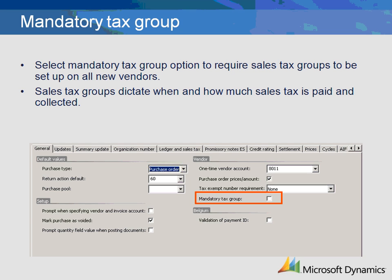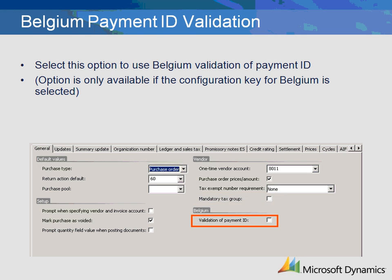The Mandatory Tax Group field will, if selected, require that all new vendors have an associated tax group defined in the vendor master. This tax group will determine when and how much sales tax is paid to the vendor. There is also an option to use Belgium Validation of Payment ID, which is only available if the configuration key for Belgium is selected.